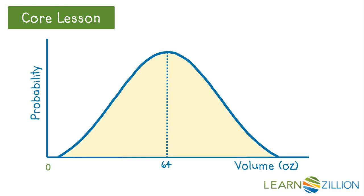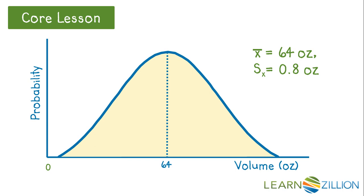Let's return to the milk jug example from the last lesson. Recall that this scenario was about a milk bottler filling half-gallon jugs. If the machine is set to fill each container with 64 ounces of milk, the distribution of volumes of all the bottles filled in one week is approximately normal with a mean of 64 ounces and a standard deviation of 0.8 ounces. In the last lesson, we used a graphing calculator to determine the percentage of bottles that were under-filled. We could use the same procedure to determine the percentage of jugs that are over-filled.